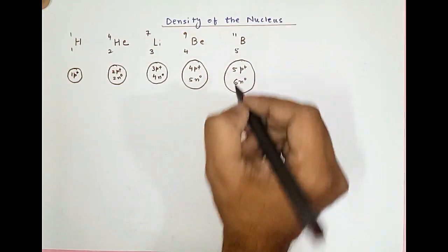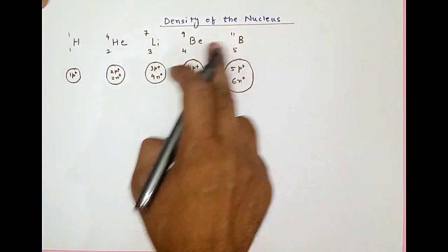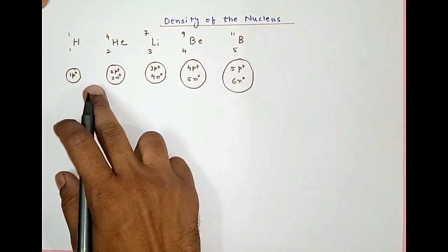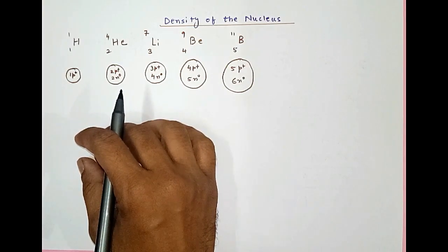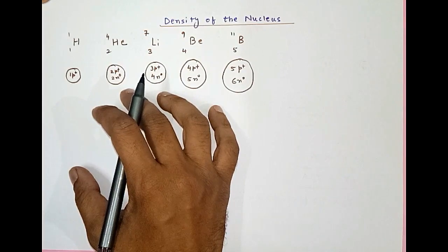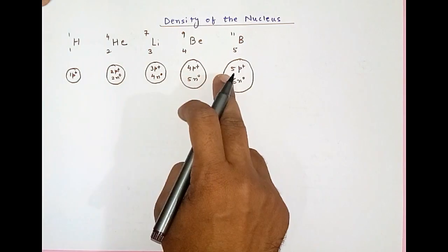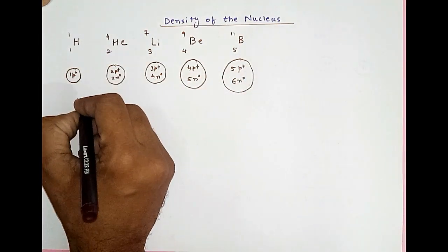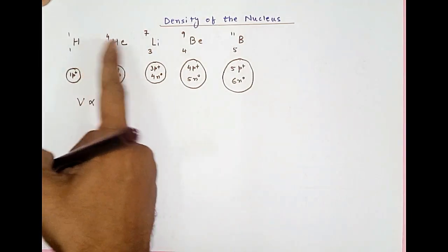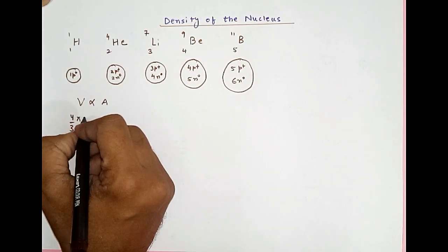What we observe is that as the mass number increases, the volume of the nucleus also increases. We are going to consider the shape of the nucleus as spherical. Spherical objects have volume equal to (4/3)πr³. So we can write that the volume of the nucleus is proportional to the mass number A, where A is the mass number.